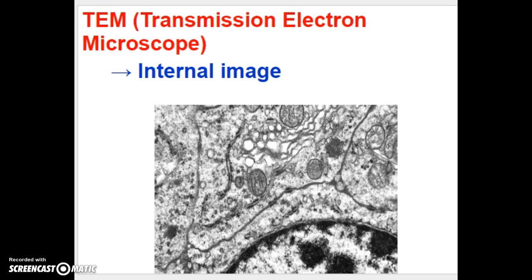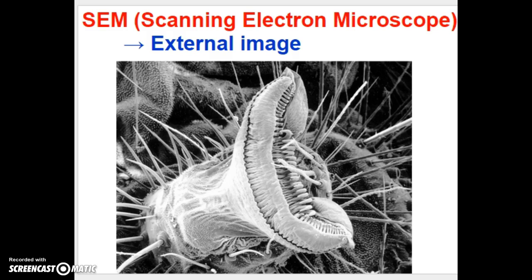Different types of electron microscopes: the transmission electron microscope, or TEM, gives an internal image of an organism — the picture shown here is actually inside a cell near the nuclear envelope. The scanning electron microscope, or SEM, gives an external scan of an organism. The little organism shown here actually lives in the roots of every single one of your eyelashes — a helpful organism that keeps gunk out of your eyes — captured in very high magnification detail.